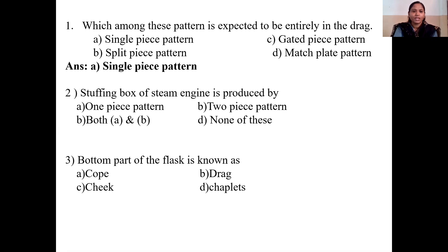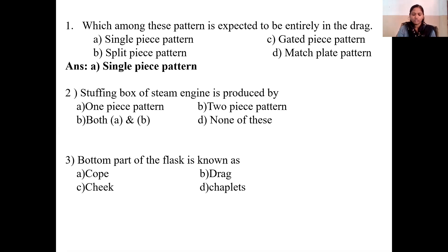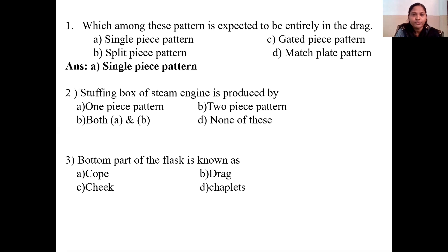Next question: the stuffing box of the steam engine is produced by — options are one piece pattern, two piece pattern, both A and B, or none of these. The stuffing box of the steam engine is absolutely produced by one piece pattern.